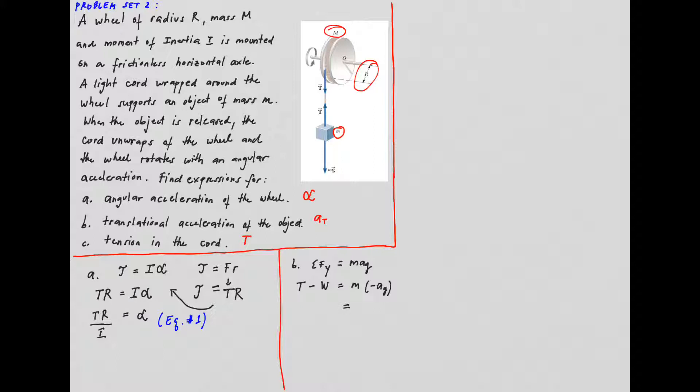And then, we'll have now T minus the weight, which is mg, equals negative m multiplied by the acceleration. Now, I will simply remove the y subscript in order for us to solve it clearly.